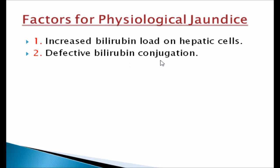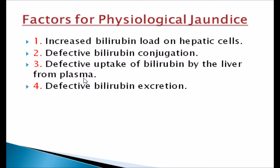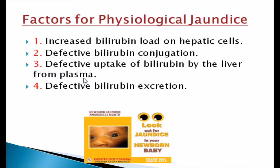The second factor is defective bilirubin conjugation — when conjugation is defective it may cause jaundice, possibly due to decreased enzymatic activity. The third factor is defective uptake of bilirubin by the liver from plasma. The fourth factor is defective bilirubin excretion, which may be due to congenital infection. These are the main factors for physiological jaundice.